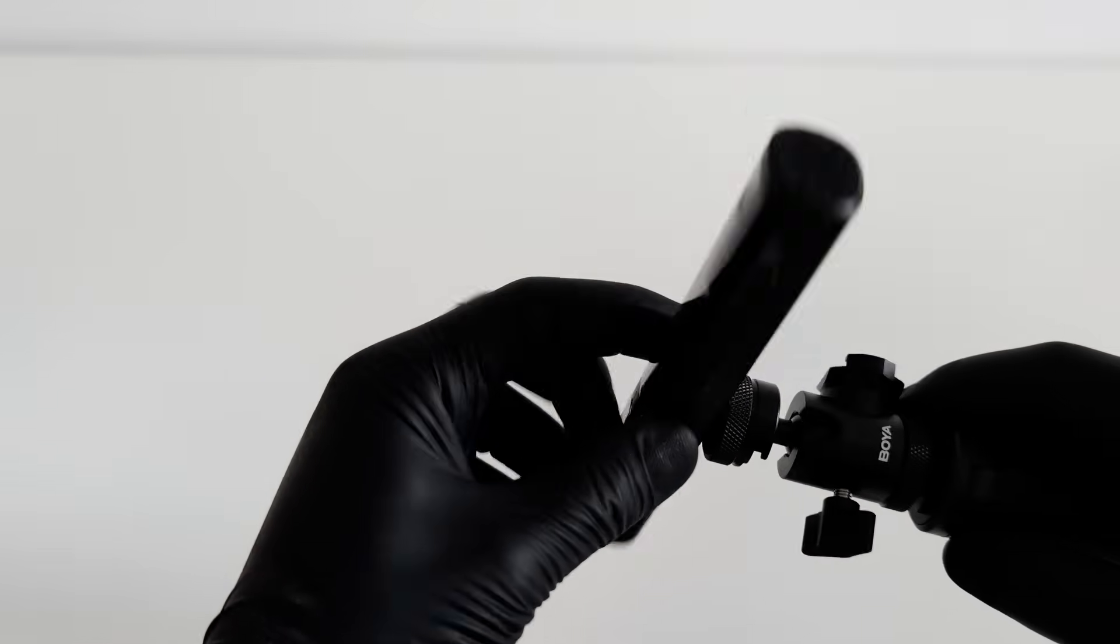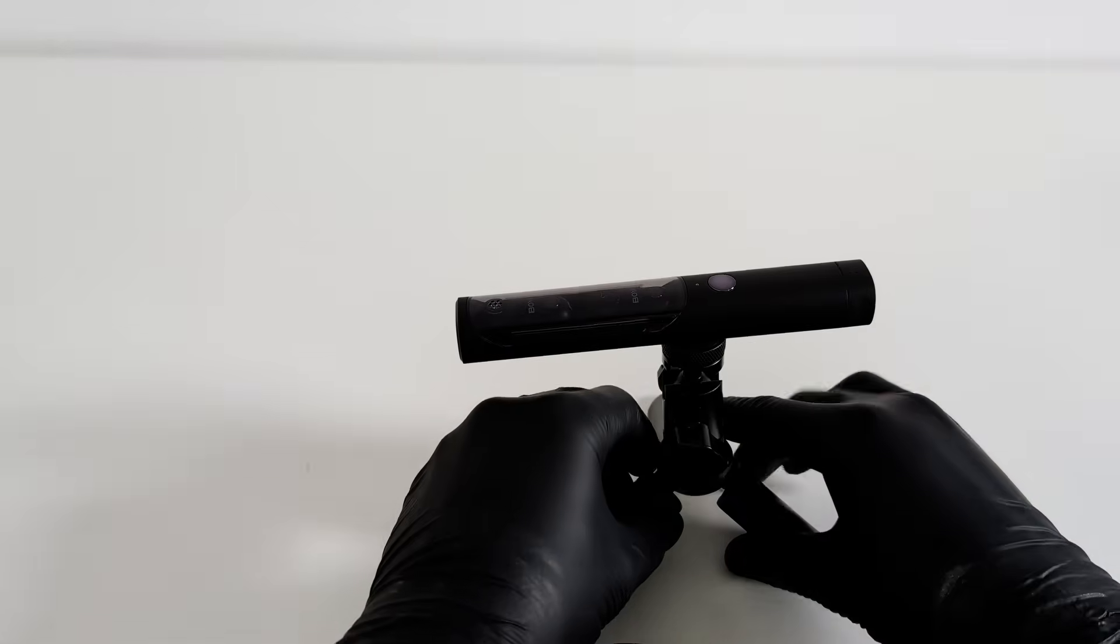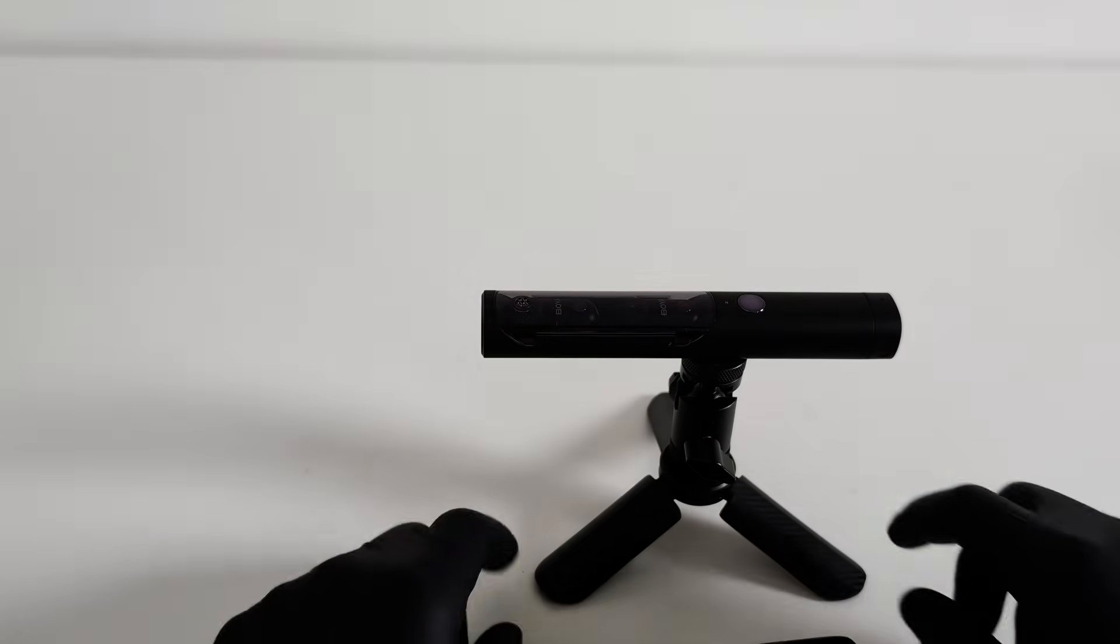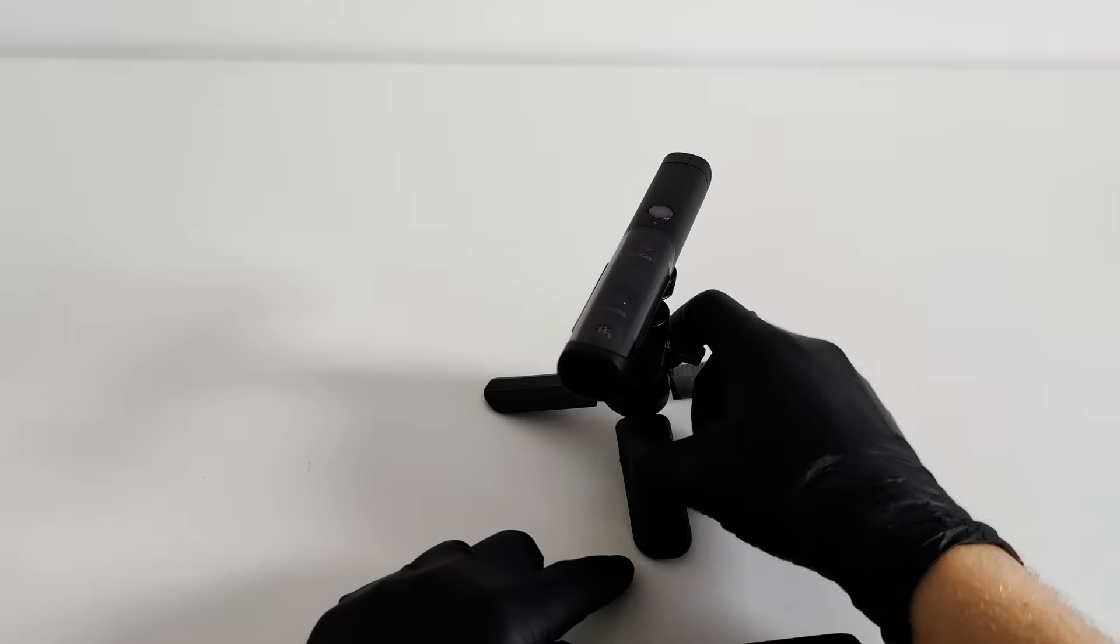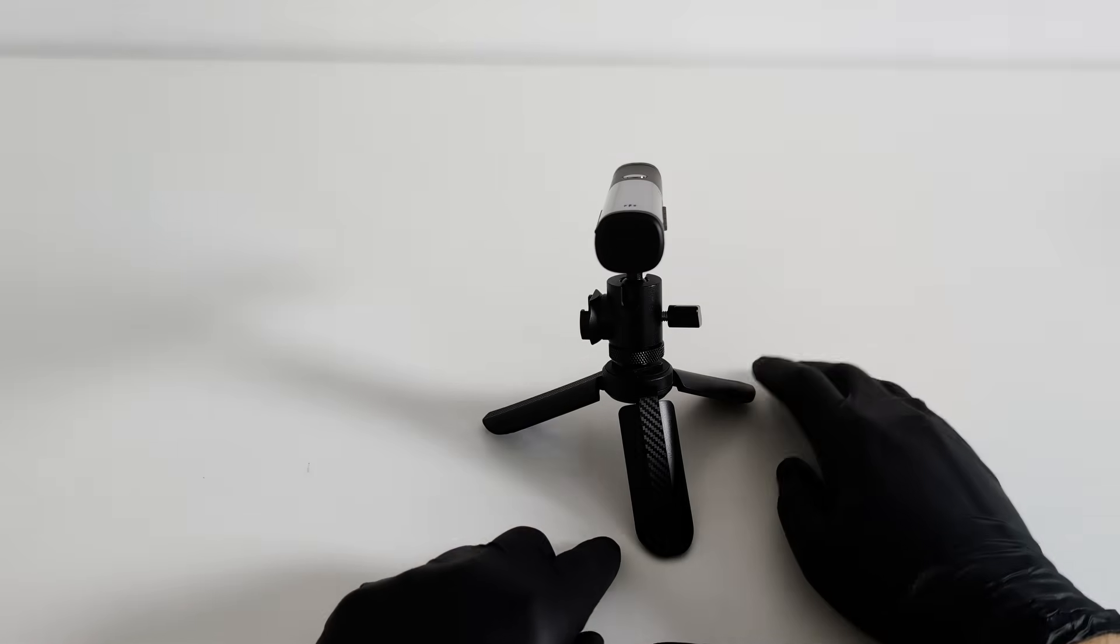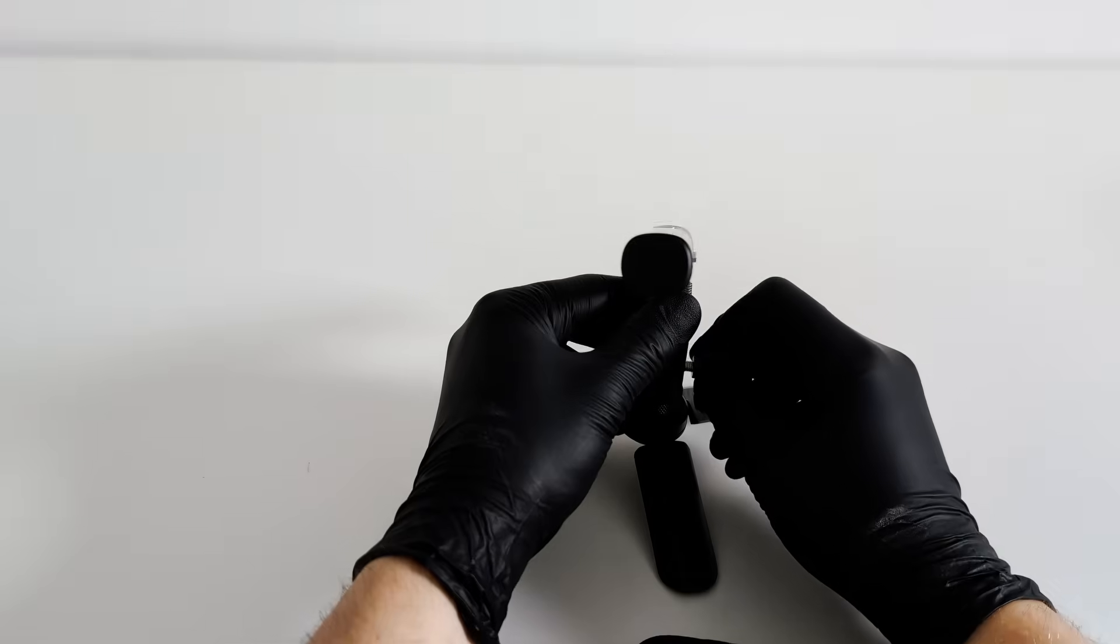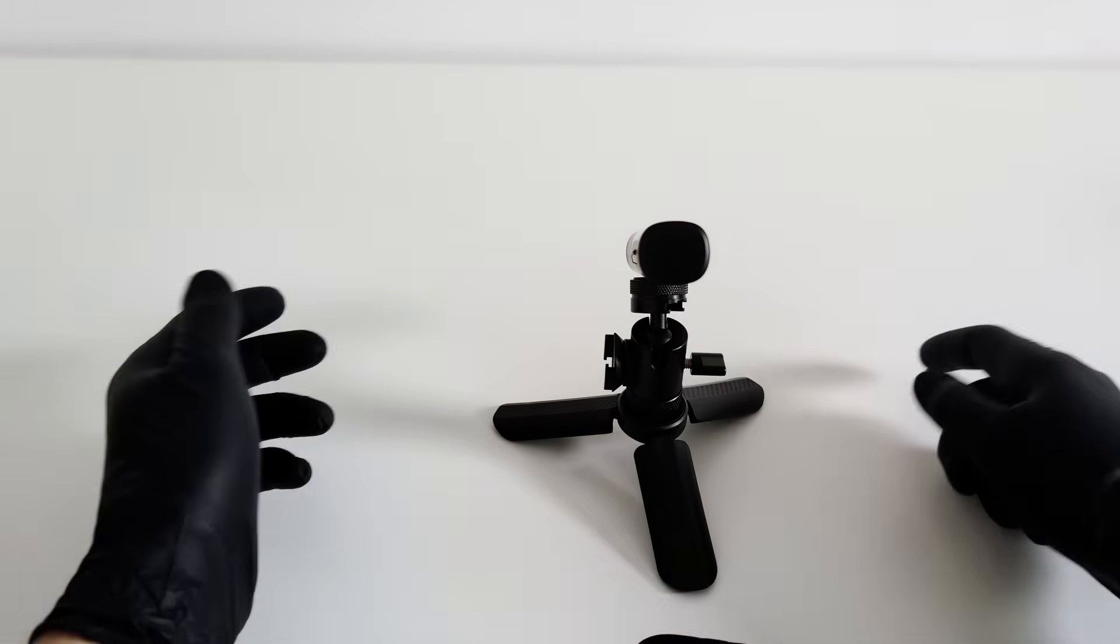But that's not all. On the back of the case, there is a standard threaded mount, and it's there for a reason. This allows you to transform the entire case into a ready-to-go studio for a podcast or interview in a single move. You don't even have to take the microphones out. It's the ultimate in simplicity and speed. Just set it up, connect the receiver to your camera or phone, and you're ready to start recording.